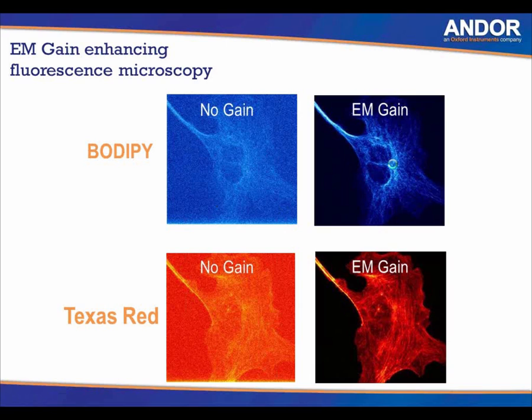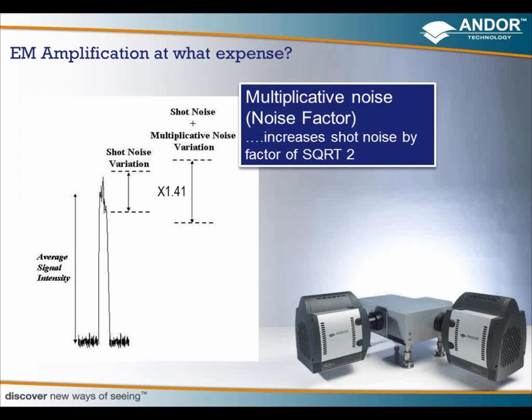EM gain and EM amplification is fantastic, but there is a downside. There is something called a multiplication noise or noise factor, which increases your shot noise by a factor of square root of two. It's very important to know that when you apply EM gain, you're also introducing an additional noise factor that increases shot noise by square root of two. You can overcome this multiplication of noise by photon counting.